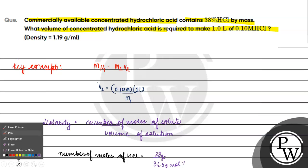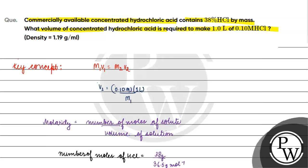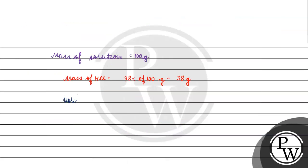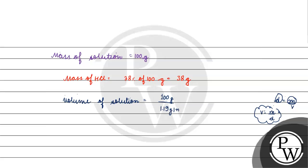The number of moles of HCl is 38/36.5. Now, if we talk about the volume of solution — volume of solution will be equal to mass divided by density. We have density of the solution given. It is mass by volume. We know the mass of solution and density of solution. Volume will be equal to mass of solution by density: 100 grams divided by 1.19 grams per mL.